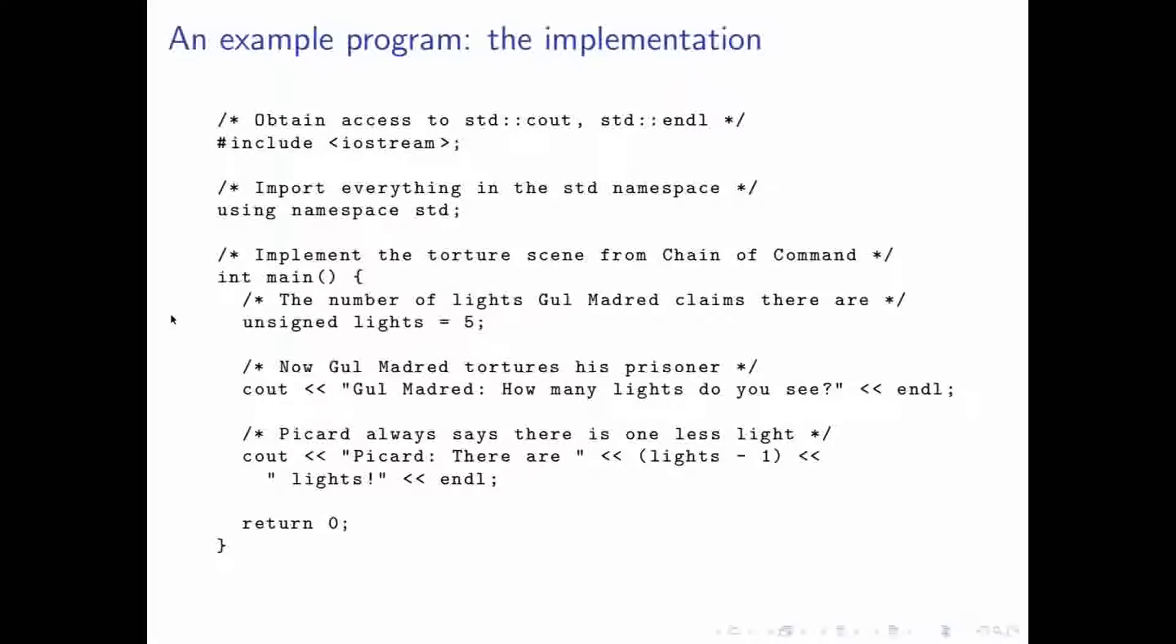And so, well, first of all, we need the number of lights that we want to use. And let's think about the data. Can we have less than zero lights? Well, no. In fact, this program would actually fail if we had zero lights. But for most cases, it works. So we're going to say that lights is an unsigned quantity. And because in the original episode, Gul Madred says there are five, we'll say there are five lights here, too. So we're going to assign five to lights in its declaration.